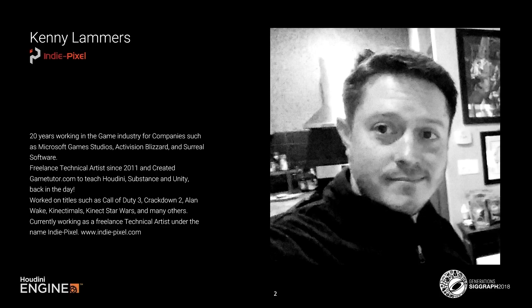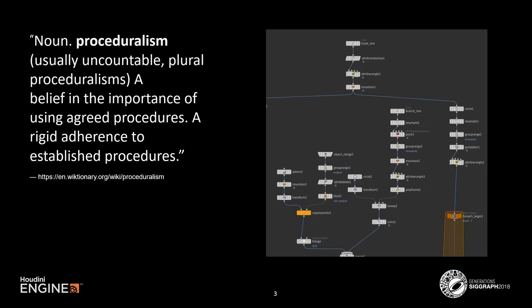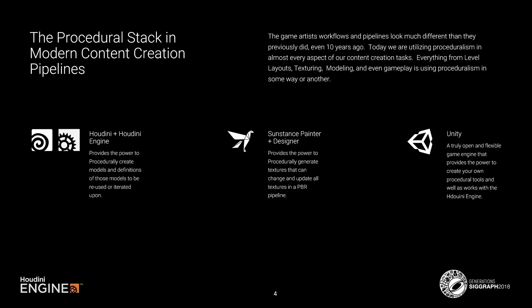Houdini and the Houdini engine really help me do that fast. First, let me lay down a foundation for what proceduralism is. Proceduralism is just a list of steps — a bunch of procedures we adhere to. It's similar to something like an action script in Photoshop — a procedural list of steps to create something automatically. Houdini is much more powerful: we create graphs that are definitions of models, and we can always go back and change something in the graph to get a completely different result.